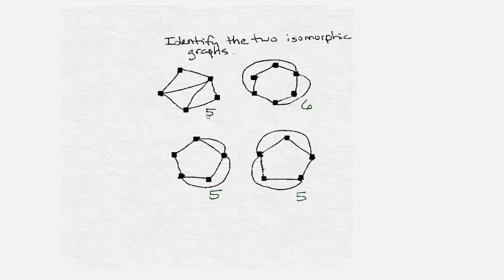So right away, we know that the graph with six vertices can't be isomorphic to any of the other three. So we've eliminated that as a possibility.